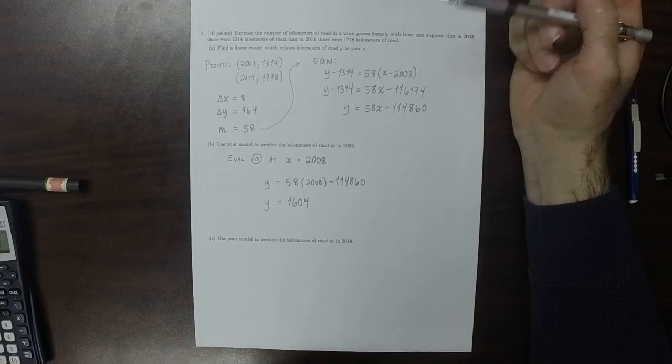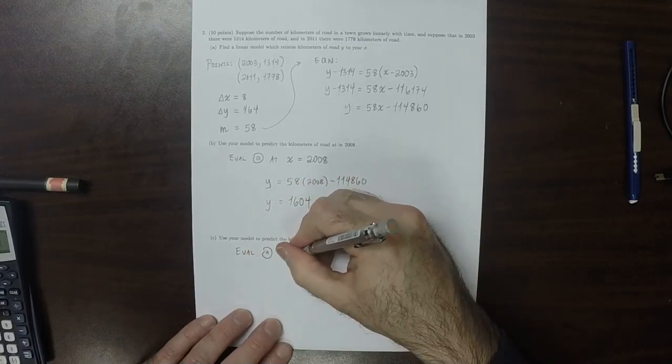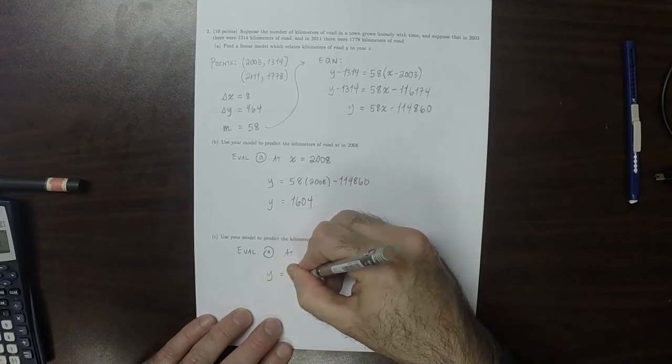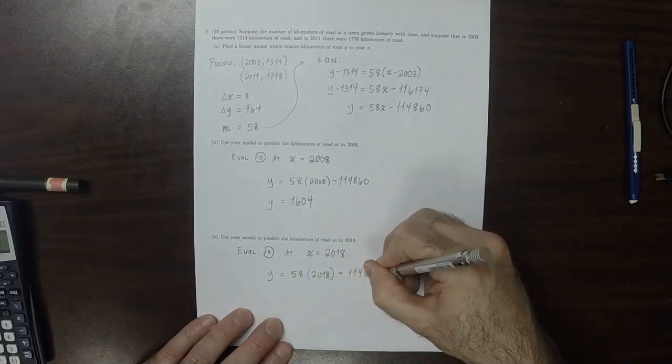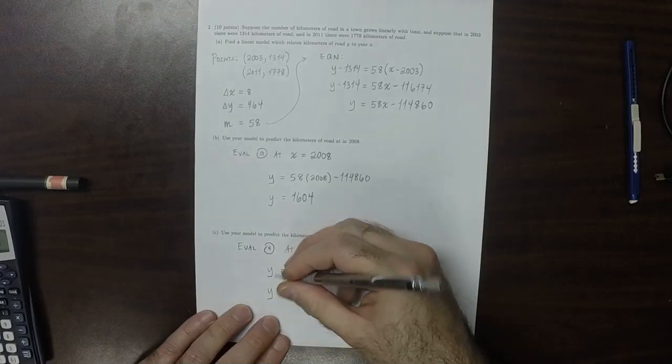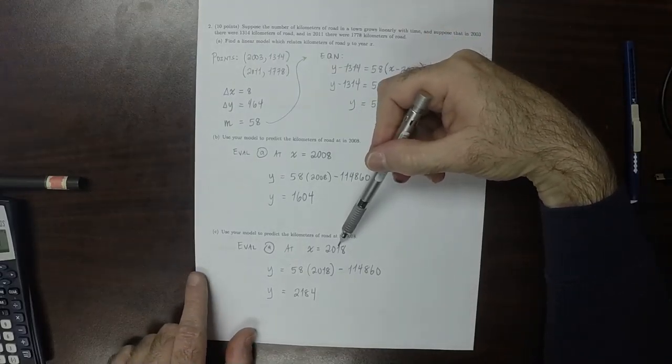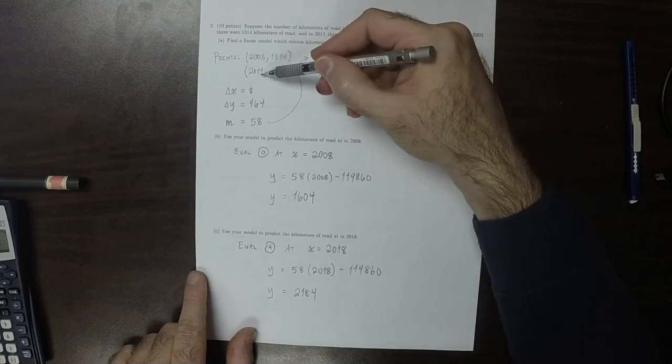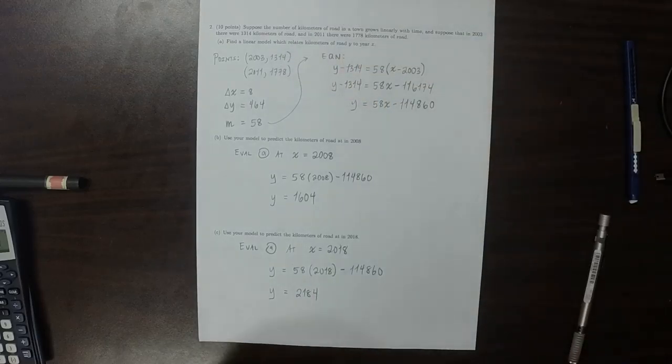And now, same thing in part C. This is evaluate the model in part A at x is 2,018. So y is 58 times 2,018 minus 114,860, which equals 2,184. And again, 2018 is outside of that interval, and it's more than 2011, so it should be the biggest number of all, and it is. So that's good.